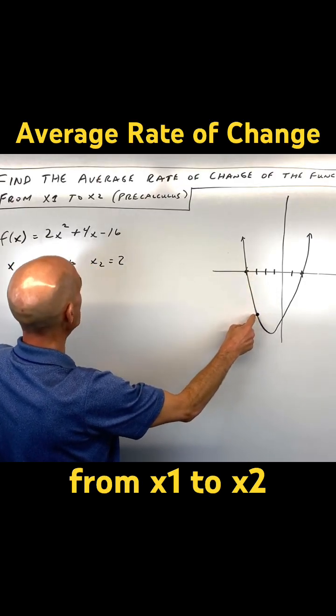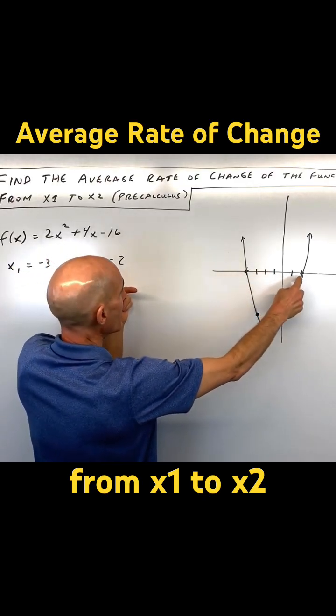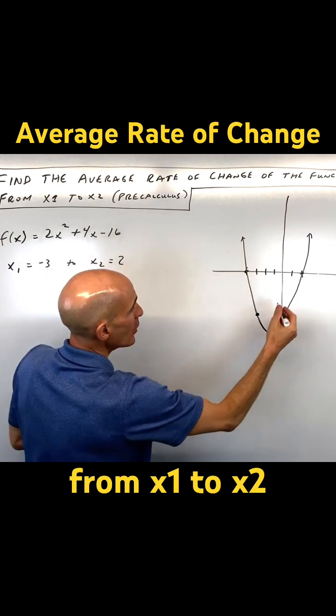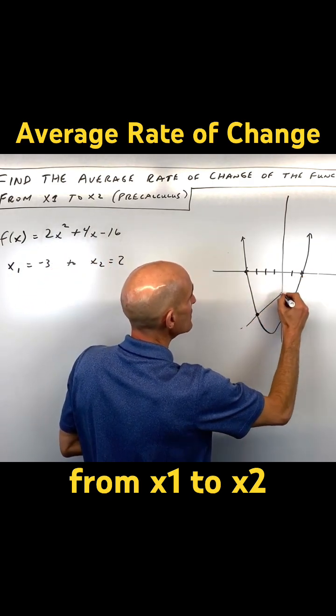So when x is negative 3, this point, to when x equals 2, this point, what's the average rate of change between these two points?